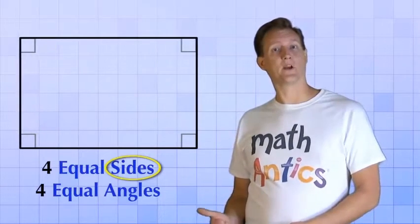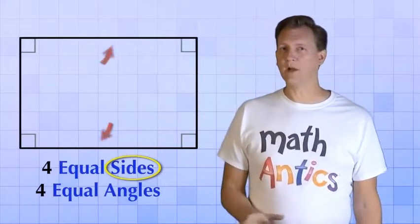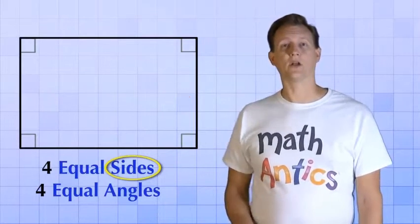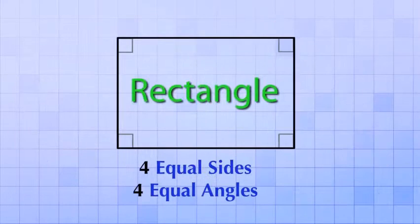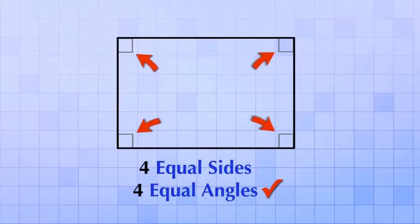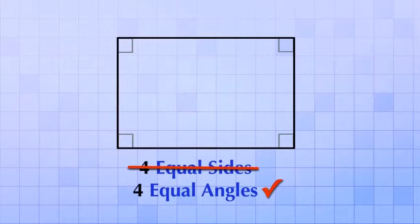Let's stretch our square in one direction so that one pair of sides is now longer than the other pair. This is what we call a rectangle. A rectangle is a quadrilateral that still has four equal angles. Notice that when we stretch the square, the angles didn't change at all. But it does not have four equal sides.